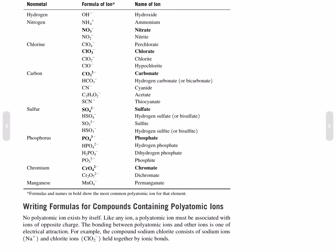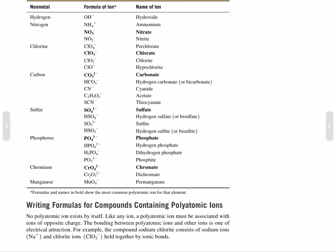Writing formulas for compounds containing polyatomic ions. No polyatomic ion exists by itself. Like any ion, a polyatomic ion must be associated with ions of opposite charge. The bonding between polyatomic ions and other ions is one of electrical attraction. For example, the compound sodium chlorite consists of sodium ions, Na^+, and chlorite ions, ClO2^-, held together by ionic bonds.